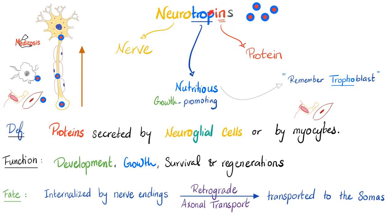Neurotrophins — 'in' usually means protein, 'neuro' means nerve, 'tropho' means nutritious or promoting growth. They are proteins secreted by neuroglial cells and also by muscle cells or myocytes. Their functions include growth and development, survival and regeneration. They are internalized by the nerve terminus and travel via retrograde axonal transport toward the soma.